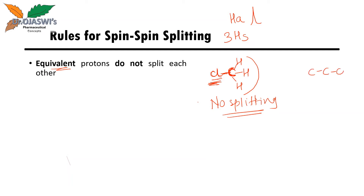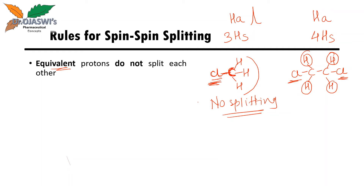Another example: if chlorine is on adjacent carbons, and these two carbons each have two hydrogens, all four hydrogens are chemically equivalent even though they are on two different carbons. Still, they are not splitting each other because all four are chemically equivalent.